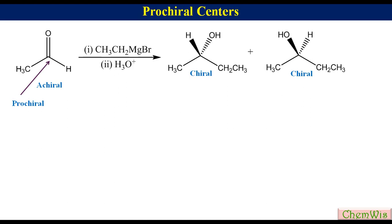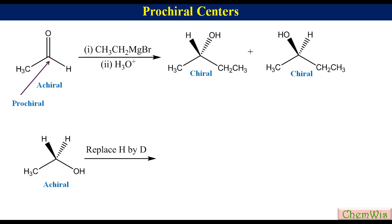Taking the example of ethanol again: it has three different groups — OH, methyl, and hydrogen. If we replace one of the two hydrogens by deuterium, we get monodeuterated ethanol, which is chiral. So this carbon is Prochiral.